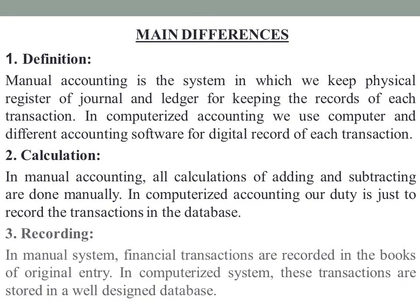Next is recording. In a manual system, financial transactions are recorded in the books of original entry — journals, journal books, and ledger accounts are all maintained physically. Whereas in a computerized system, these transactions are stored in a well-designed database, with accounting software serving as the central data store.